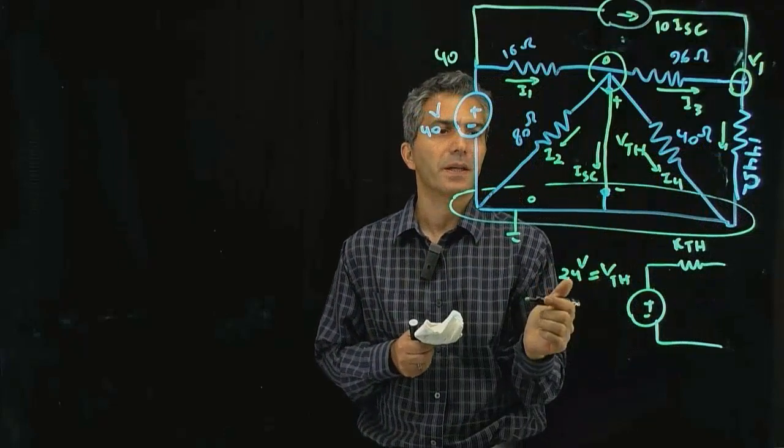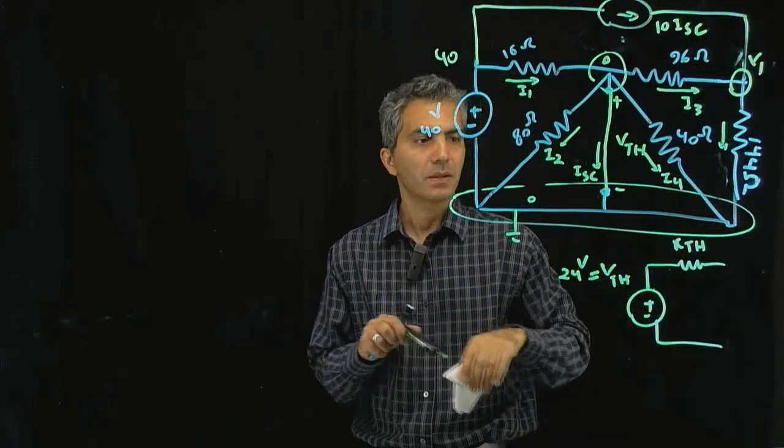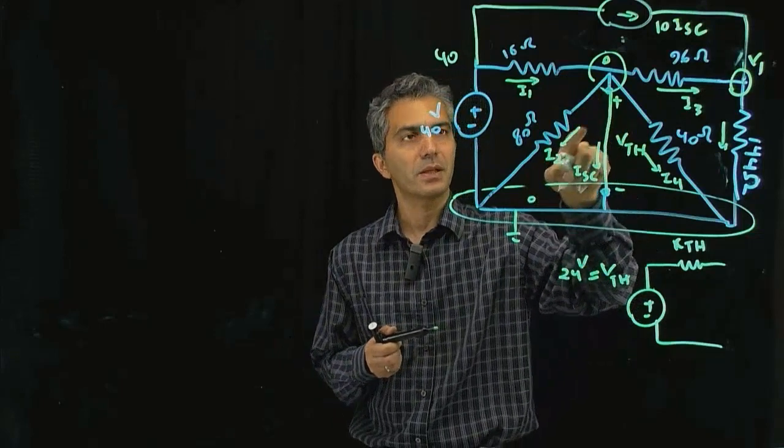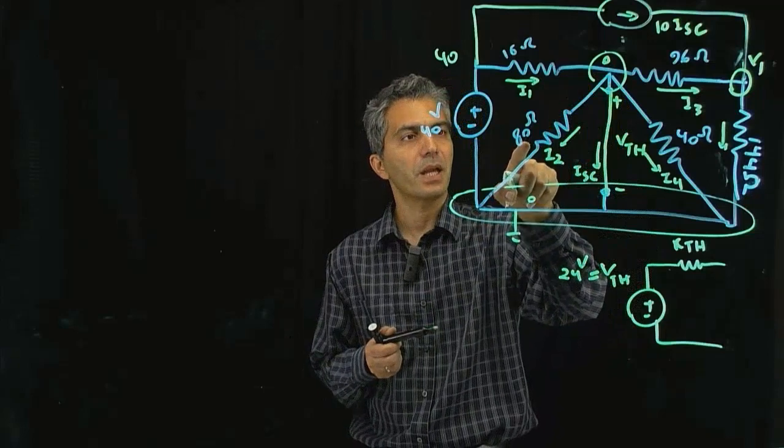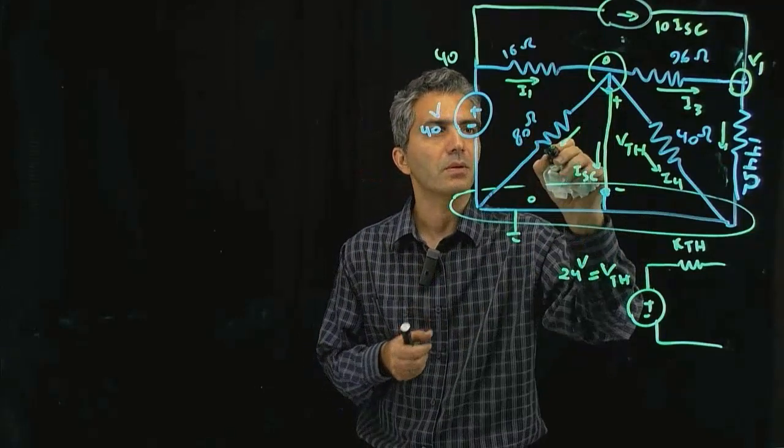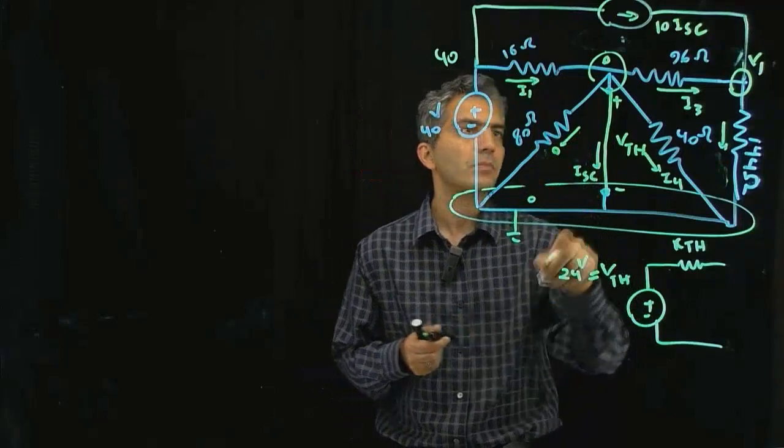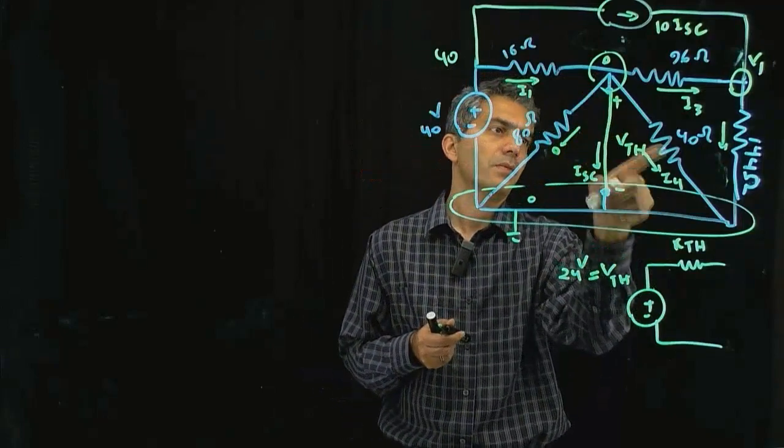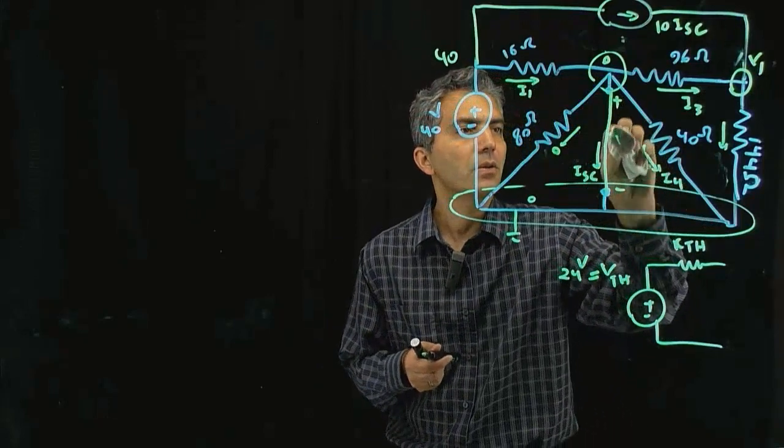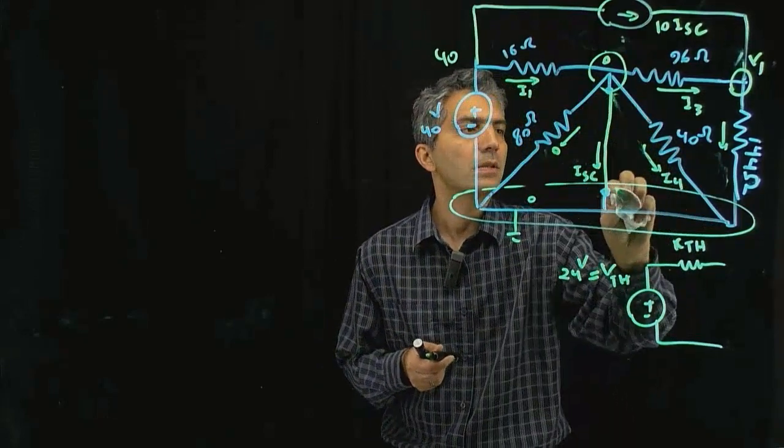I can actually do something to simplify the circuit too. The current I2 that I labeled there is 0 minus 0 divided by 80, so that's 0. I don't have to label that anything. For this one, for this 40 ohm, 0 minus 0 divided by 40, so that current also is 0.